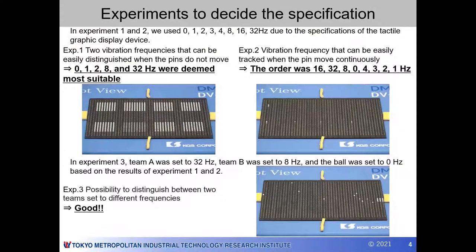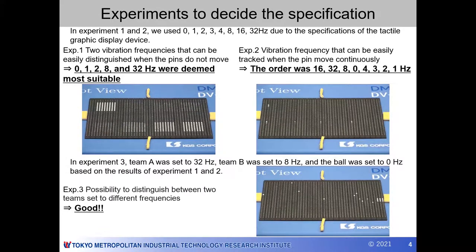Next, we wanted to know the appropriate specifications of the proposed system, so we carried out three basic experiments. The first was to identify the combination of different vibration frequencies that allow the user to easily distinguish between the two teams. We used 0, 1, 2, 3, 4, 8, 16, and 32 hertz, based on the specifications of the tactile graphic display device.